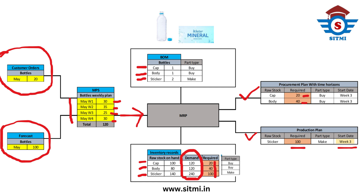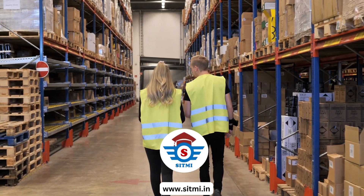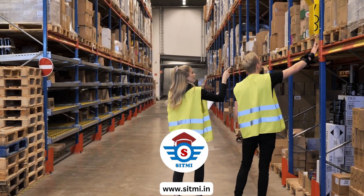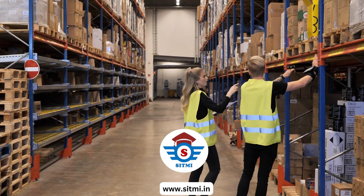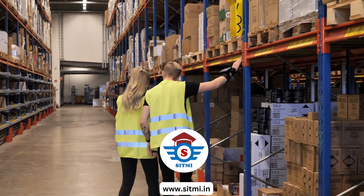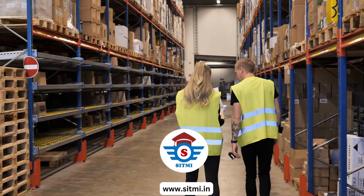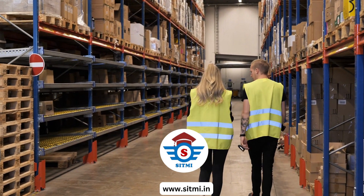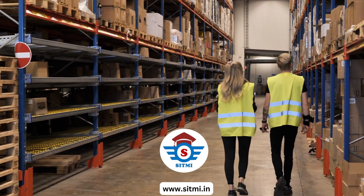This was a simple example, but in real life in an organization there are thousands of products. The bill of material is also very extensive for multiple products, which may have multiple sub-components or raw materials. Based on that, the MPS and MRP plans coming out are very complicated and extensive in nature.